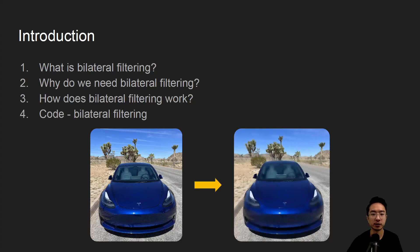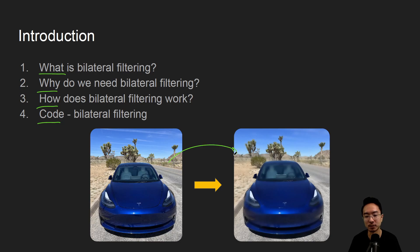In this video we're going to talk about bilateral filtering in OpenCV using Python. We'll start off by saying what it is, why you need it, how it works, and jump straight into a coding example. By the end of this video, we'll see how we could transform the image on the left to the image on the right. If you look closely, you might notice something special about this filter.